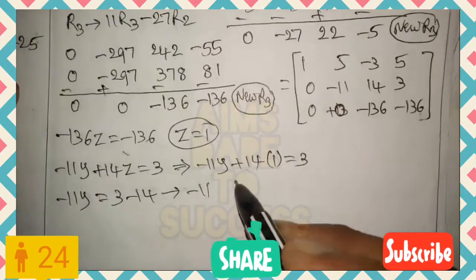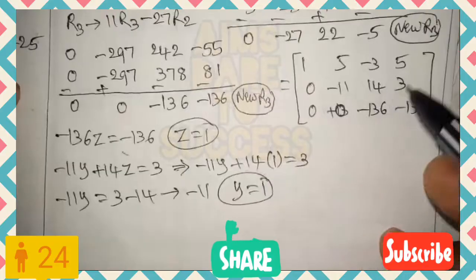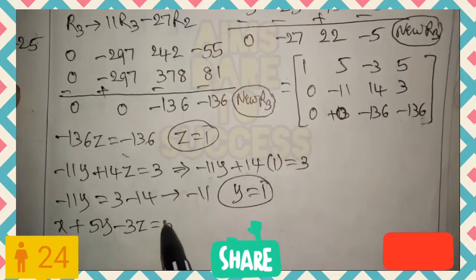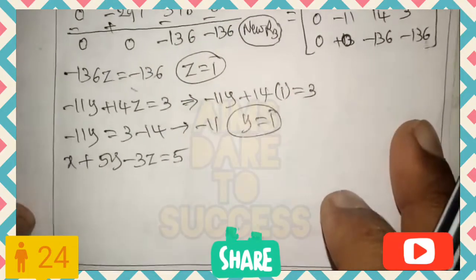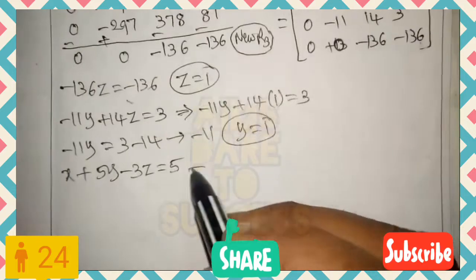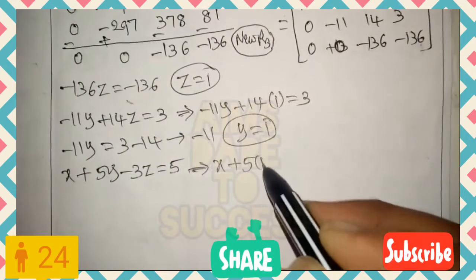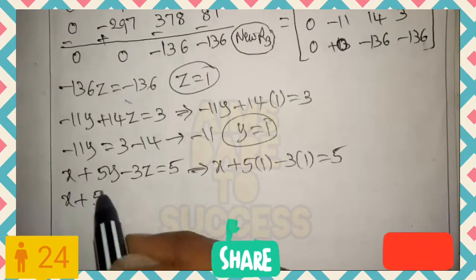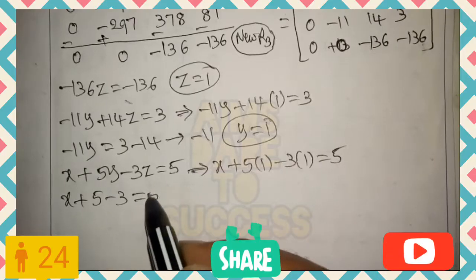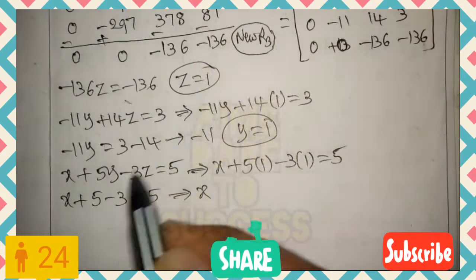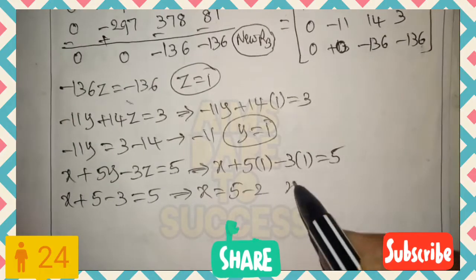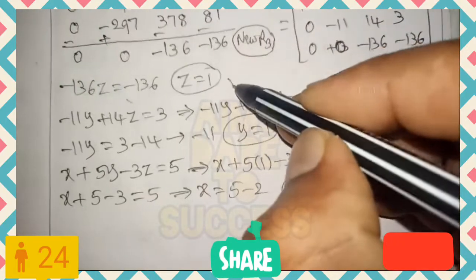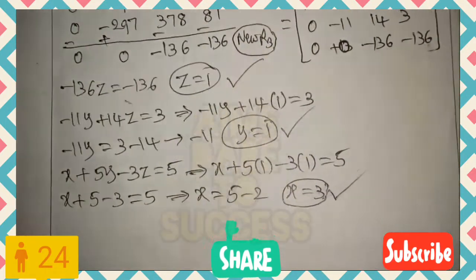With z = 1, from the second row we get y = 1. Substituting y = 1 and z = 1 into the first row equation: x + 5(1) - 3(1) = 5, so x + 5 - 3 = 5, giving x = 3. Therefore the required answer is x = 3, y = 1, z = 1.